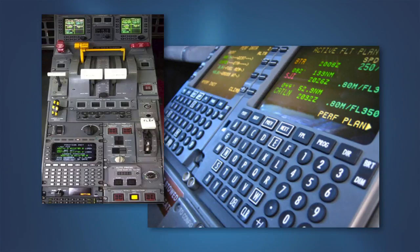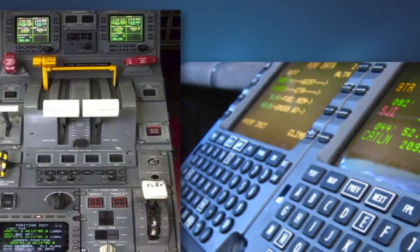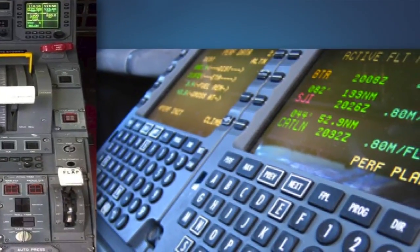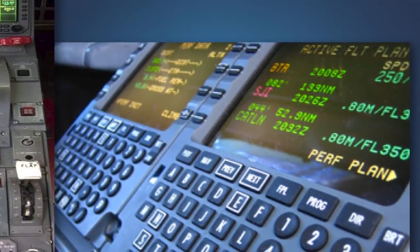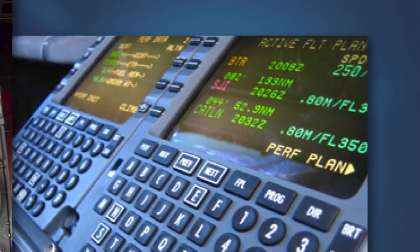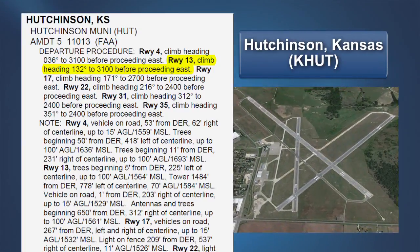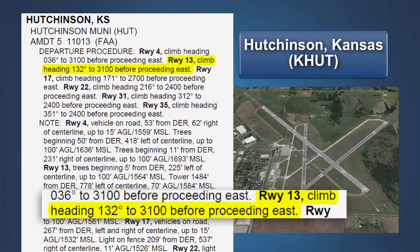The flight management systems on many business airplanes provide features for computing airplane performance, including climb weight limitations. Pilots should be aware that the results provided by these systems are only as accurate as the obstacle information entered by the pilot. If the pilot enters the climb gradient requirement published on an IFR departure procedure, the results may be misleading. Hutchinson, Kansas, runway 13 has a very simple obstacle departure procedure: climb heading 132 to 3,100 feet MSL before proceeding east. Since no climb gradient is published for this runway, the standard 200 feet per nautical mile requirement is assumed.